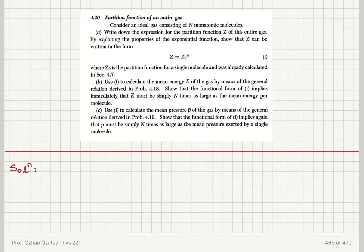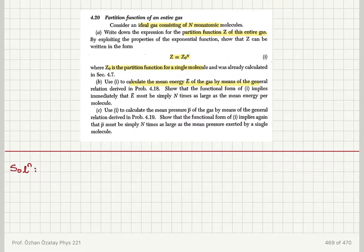Partition function of an entire gas. Consider an ideal gas consisting of capital N monatomic molecules. Write down the expression for the partition function of the entire gas. By exploiting the properties of the exponential function, show that Z can be written as Z0 to the power N, where Z0 is the partition function for a single molecule. Use this expression to calculate the mean energy of the gas, showing that E-bar is N times the mean energy per molecule, and P-bar is N times the mean pressure per molecule, calculated via the general relations from problems 4.18 and 4.19.